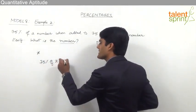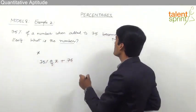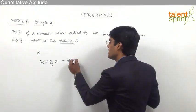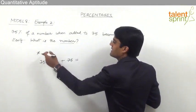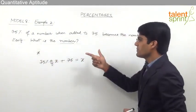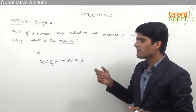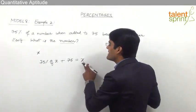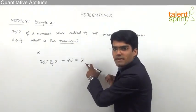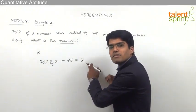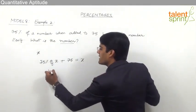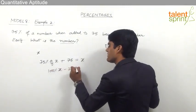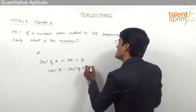75% of X, when added to 75, becomes the number itself — that is, the sum of these two equals X. By simplifying this equation we get the required answer. We know X is nothing but 100% of itself, so 100% of X minus 75% of X equals 75.